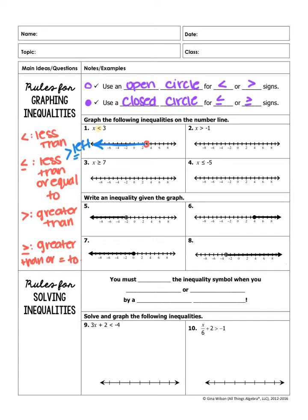I'm going to let you try number 2. For number 3, it says x is greater than or equal to 7. My first step would be to find 7 on our number line and look at the inequality. Since it's greater than or equal to, I use a closed circle on 7. And whenever I have greater than — whether it's greater than or equal to or just greater than — I draw an arrow to the right. I'll let you try number 4 on your own.